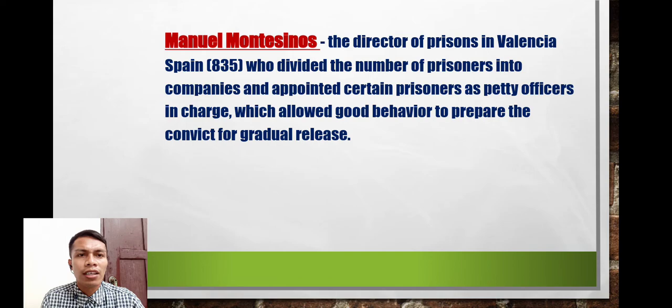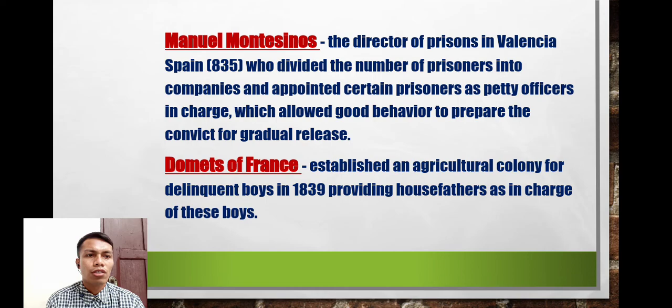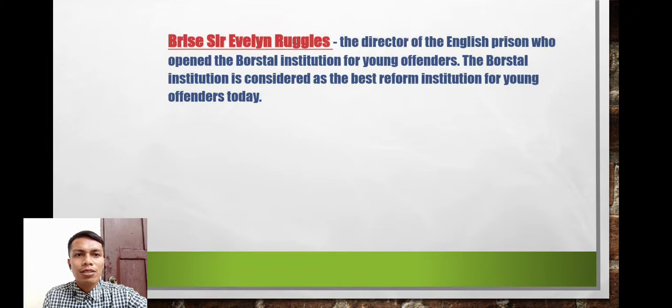Manuel Montesinos was director of prisons in Valencia, Spain, who divided prisoners into companies and appointed certain prisoners as non-commissioned officers in charge, which allowed good behavior to prepare the convict for gradual release. Demetz of France established an agricultural colony for delinquent boys in 1839, providing house fathers in charge of these boys.